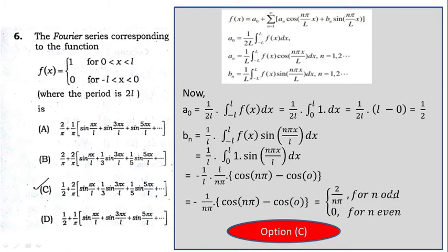For odd n (e.g., n = 1): cos(π) = −1, so −1 − 1 = −2. The two minus signs cancel, giving bₙ = 2/nπ. Only the odd terms survive: sin(πx/L), sin(3πx/L), sin(5πx/L), with coefficients 1, 1/3, 1/5, 1/7, and so on.